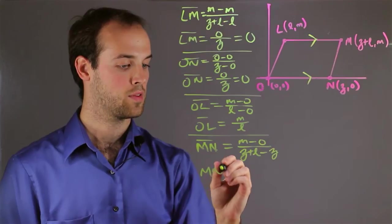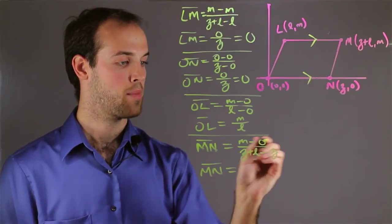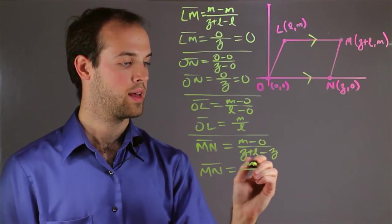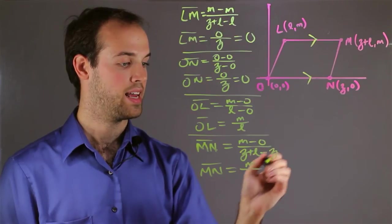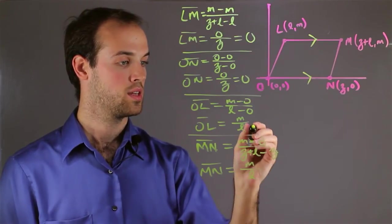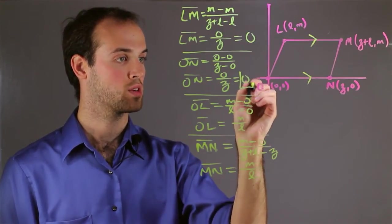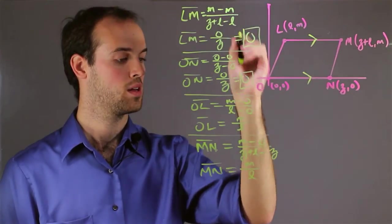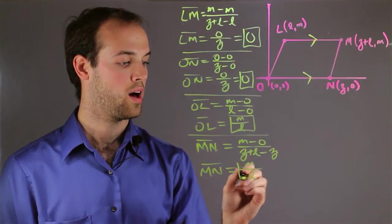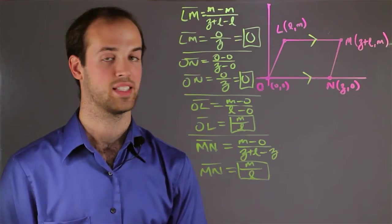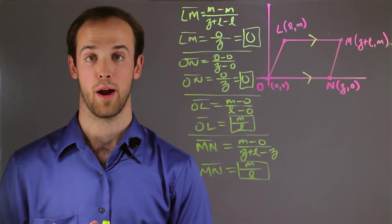And then we're just going to simplify. M minus zero is M, and Z plus L minus Z is L. So we have all four slopes now. And as you can see OL and MN have the same slope, which means that they must be parallel.